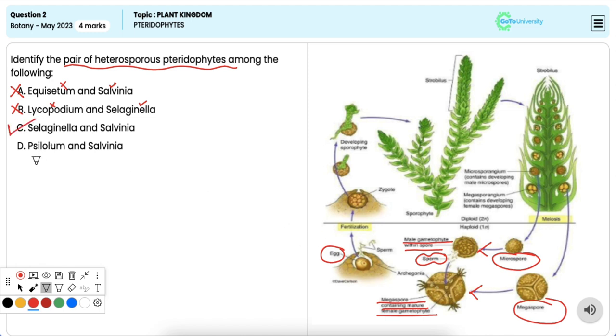Option D: Psilotum and Salvinia. It is also incorrect. Psilotum is homosporous while Salvinia is heterosporous.